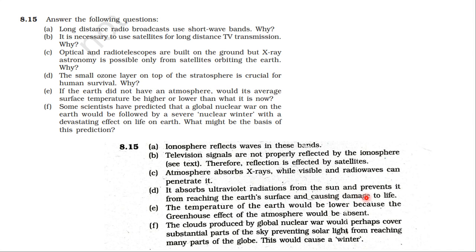The small ozone layer on top of the stratosphere is crucial for human survival because it absorbs ultraviolet radiation from the sun, preventing it from reaching the earth's surface and causing damage to life. Without an atmosphere, the earth's average surface temperature would be lower because the greenhouse effect would be absent. A global nuclear war would be followed by nuclear winter because clouds produced would cover substantial parts of the sky, preventing solar light from reaching many parts of the globe.